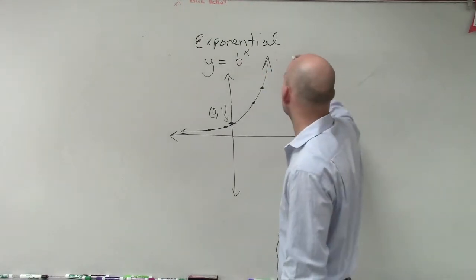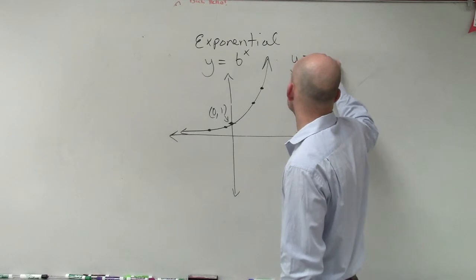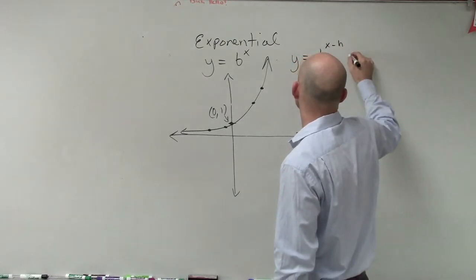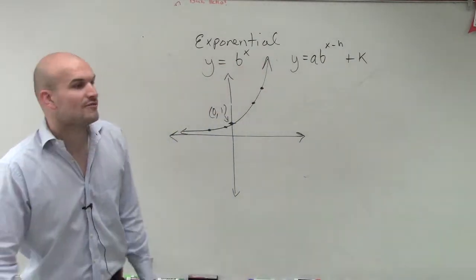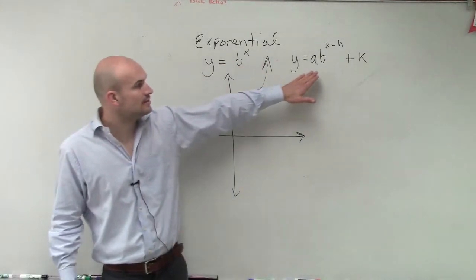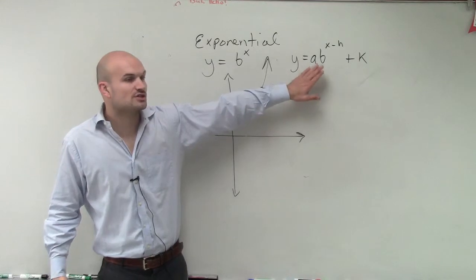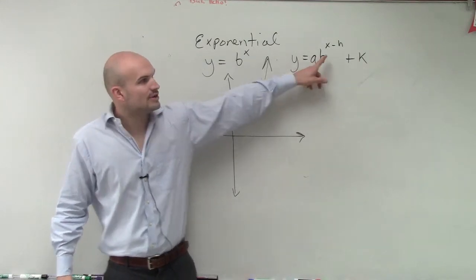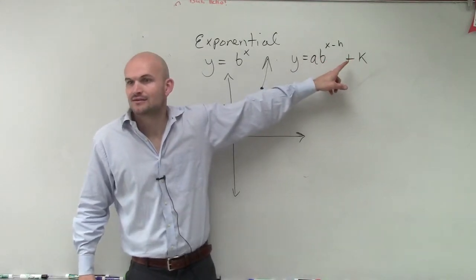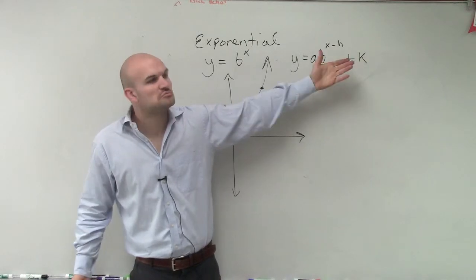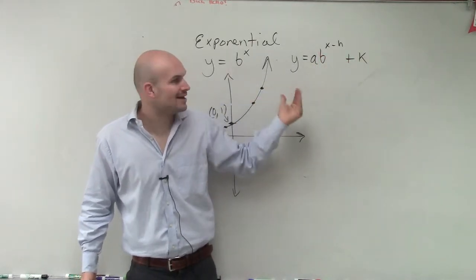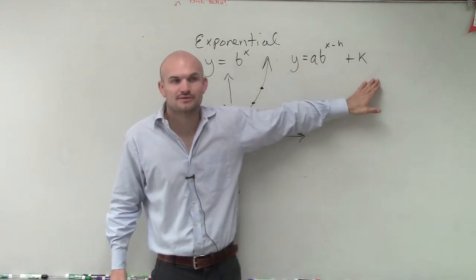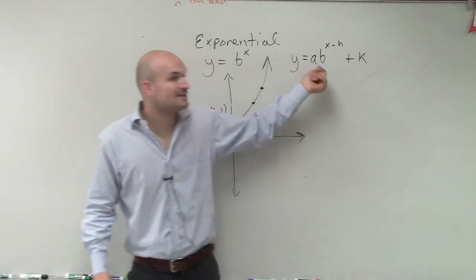And then the next thing is, rather than writing this format, we can also write it as y equals a b to the x minus h plus k, all right? So if I gave you a function, an exponential function in this format, what do you think the h is going to tell us? H is going to do left and right again, right? What do you think that k is going to do?